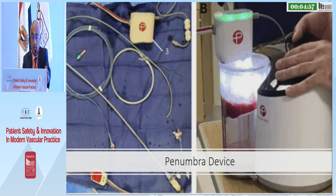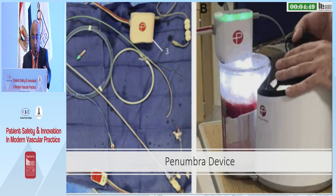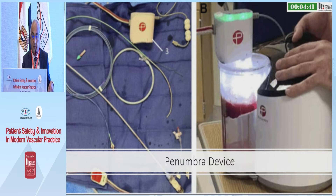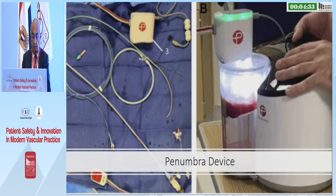This is the computer-assisted mechanical aspiration device — the Penumbra device. It is a pump that aspirates the clot. When the catheter is inside the clot it aspirates; when the catheter is in a patent vein, it stops aspirating automatically, thereby reducing blood loss. It also has a separator that, when withdrawn inside the catheter, helps remove the thrombus.